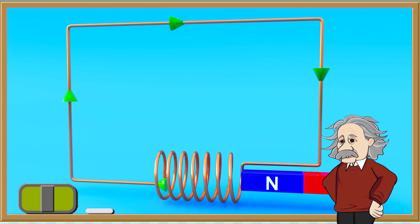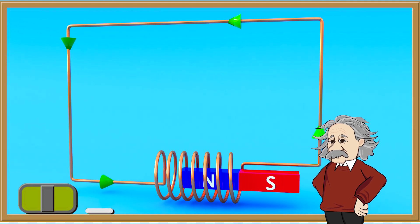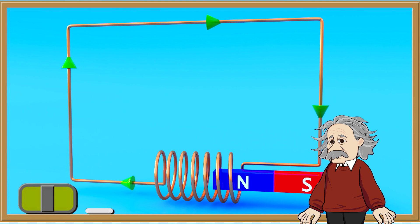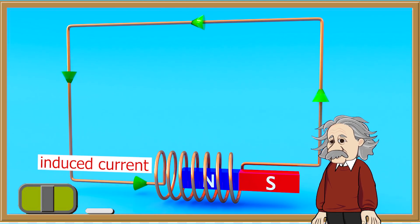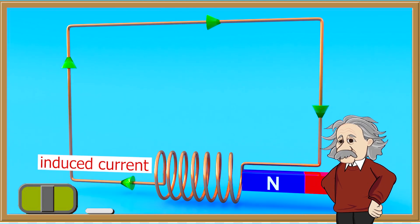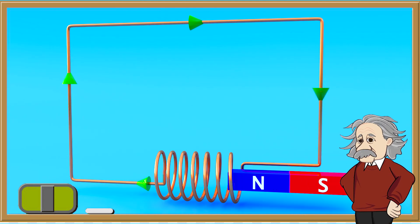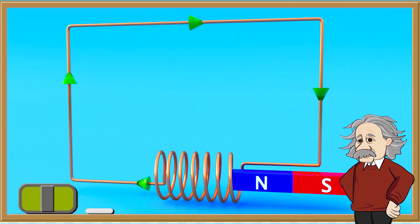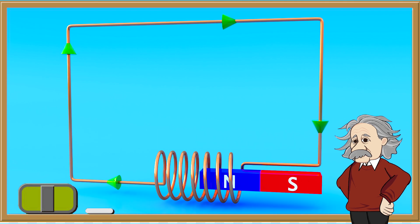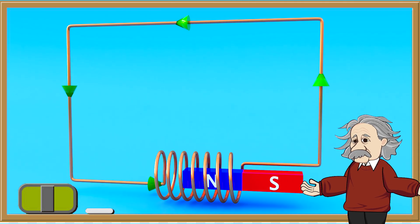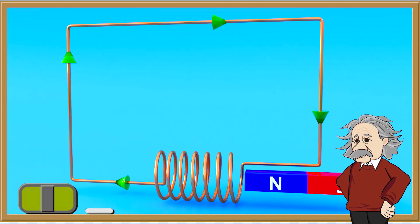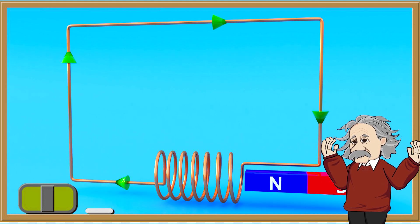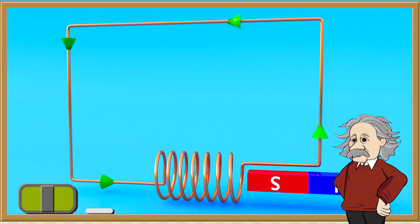In this example, you can see how the magnet moves in and out from the coil of a wire. As you can see, this also produces an induced current. As we have seen in past examples, the direction of the current changes when the direction of movement of the magnet changes. Remember that we can also change the direction of induced current if we switch the poles of the magnet.